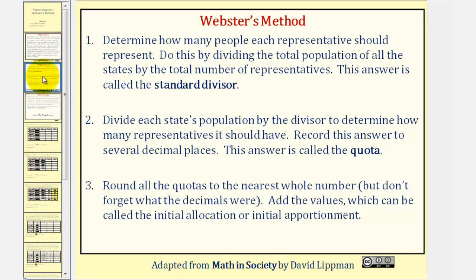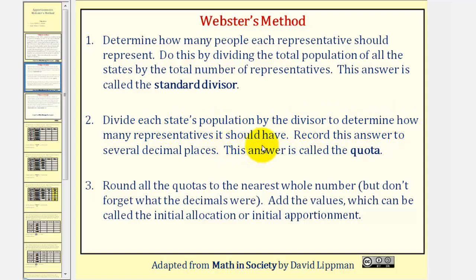To apply Webster's method, we first determine how many people each representative should represent. We do this by dividing the total population of all the states by the total number of representatives. This answer is called the standard divisor. Step two: we divide each state's population by the divisor to determine how many representatives it should have. We record this answer to several decimal places. This answer is called the quota.